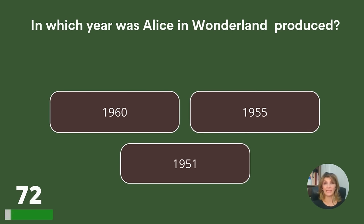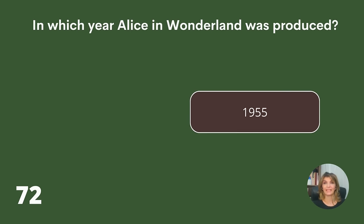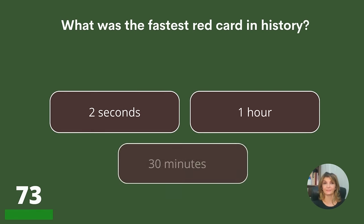In which year was Alice in Wonderland produced? 1960, 1955, or 1951? Answer: 1955.